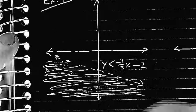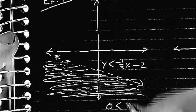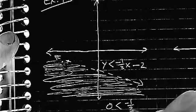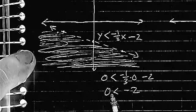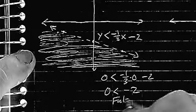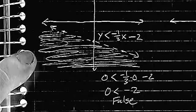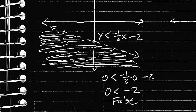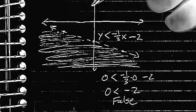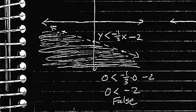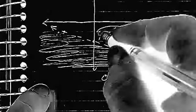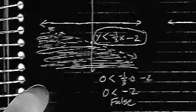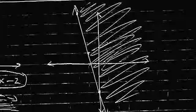Let's just test it. Let's pick 0, 0, and plug it in just to make sure I'm right. Negative one-third times zero minus 2. Zero is less than negative 2. Zero is smaller than negative 2. That is definitely false. So that means we were correct because 0, 0 should give me a false statement since it is not in the shaded region. So this was the inequality.